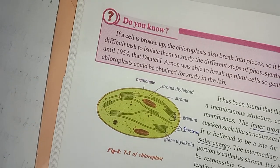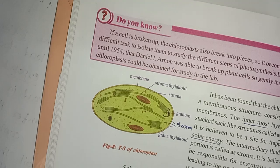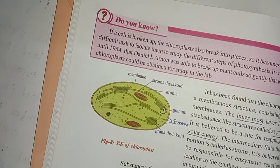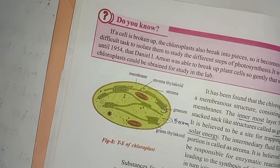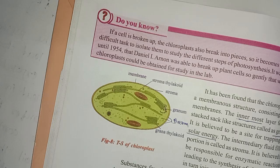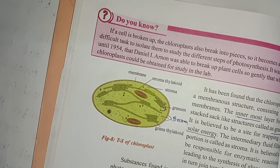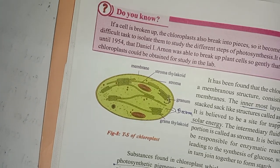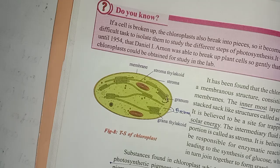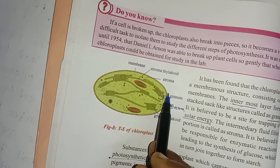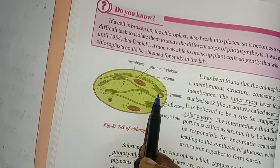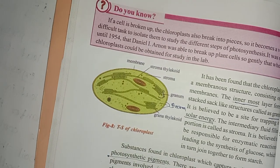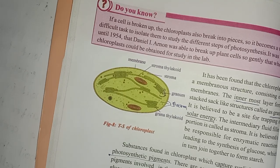Substances found in chlorophyll that capture sunlight are called photosynthetic pigments. There are several types involved in producing organic molecules like glucose in plants. Chlorophyll is of two types: chlorophyll a, which is bluish-green, and chlorophyll b, which is yellowish-green. Chlorophyll contains magnesium as its central pigment — just as hemoglobin in our blood contains iron.